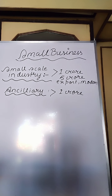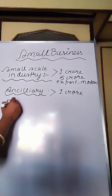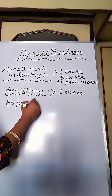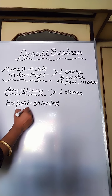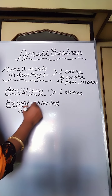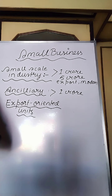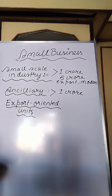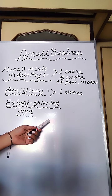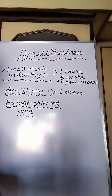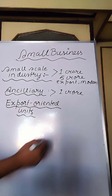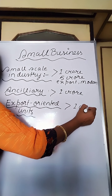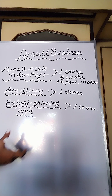Next comes export oriented units. Small business units which export more than 50% of their production are referred to as export oriented units. The investment of these units should not exceed 1 crore. So here also the limit is 1 crore, and they export 50% of their produced units.